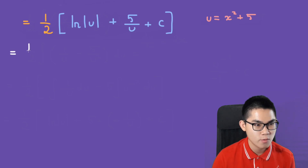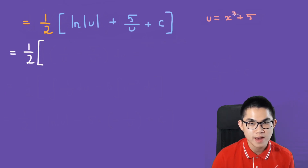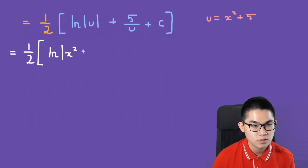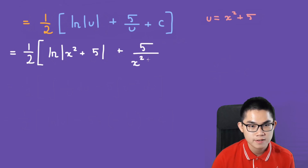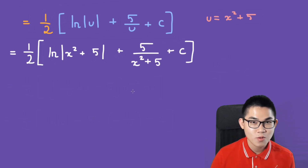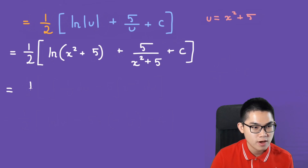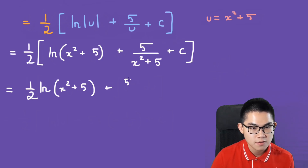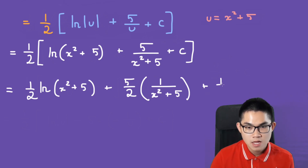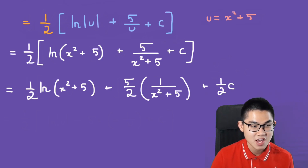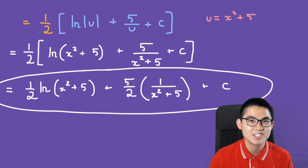We're almost done. We change u back to x, giving 1 over 2 times ln of x squared plus 5 plus 5 over x squared plus 5, plus c. Note that x squared plus 5 is always above the horizontal axis, so we can drop the absolute value. Distributing the 1 over 2, we get 1 over 2 times ln of x squared plus 5, plus 5 over 2 times 1 over x squared plus 5, plus c. Since c is just a constant, we write it simply as c. That is the answer to this integral.